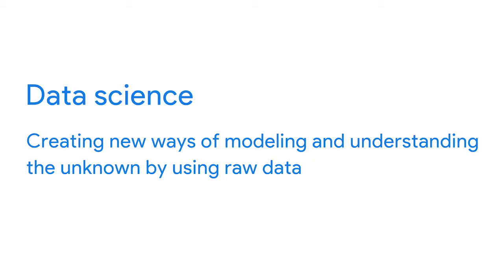Now let's talk about some common misconceptions you might come across. First is the difference between data scientists and data analysts. It's easy to confuse the two, but what they do is actually very different. Data science is defined as creating new ways of modeling and understanding the unknown by using raw data. Data scientists create new questions using data, while analysts find answers to existing questions by creating insights from data sources.